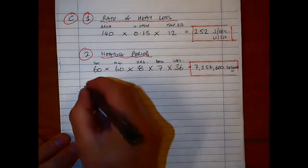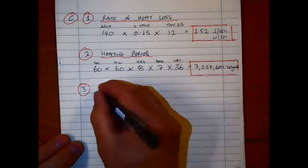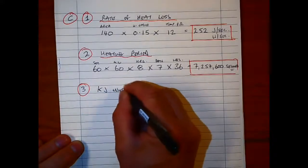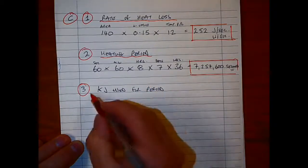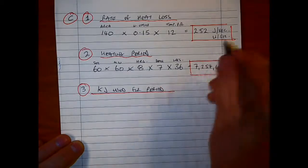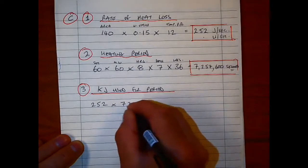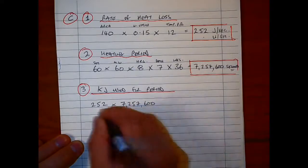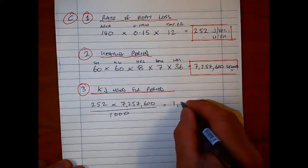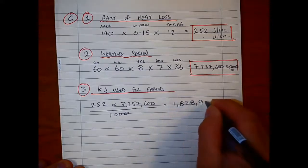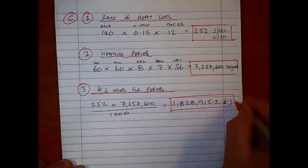Now, because I've got seconds in the heating period and the rate of heat loss, I can use the two of these here now to calculate the amount of kilojoules that are used, because it's joules per second that we have from our first calculation. There's two parts to this here—if you wanted to, you could work out just the joules and then take the kilojoules. I'm just working it out in one here to get the kilojoules used for the heating period. So 252 multiplied by our 7,257,600 seconds, put that over a thousand, and calculate that out. It's going to give us another fairly large figure of 1,828,915.2, and that's kilojoules. That's all important—directly kilojoules.